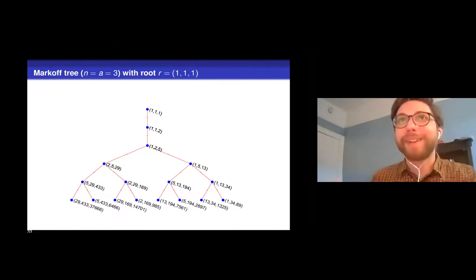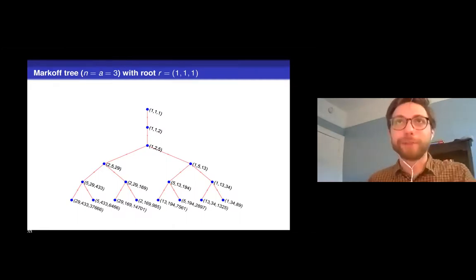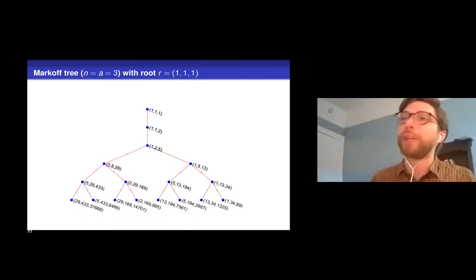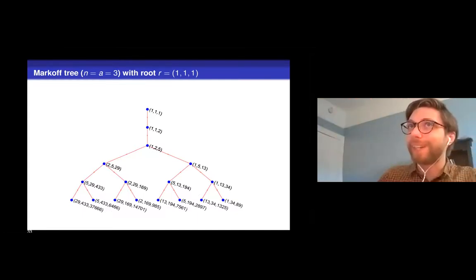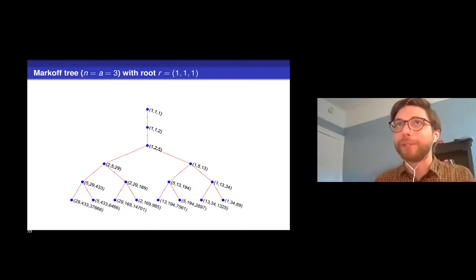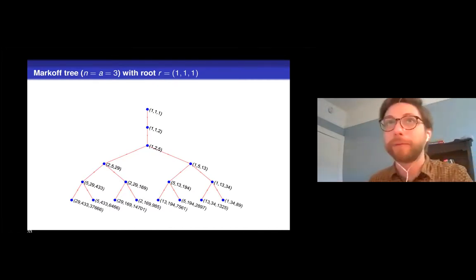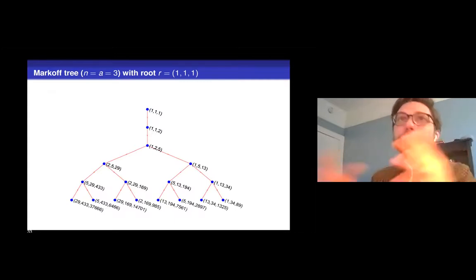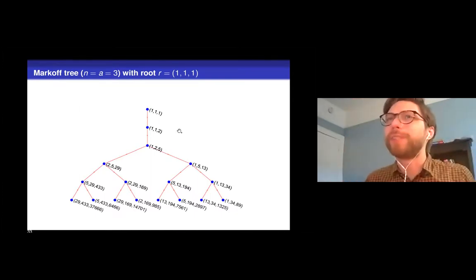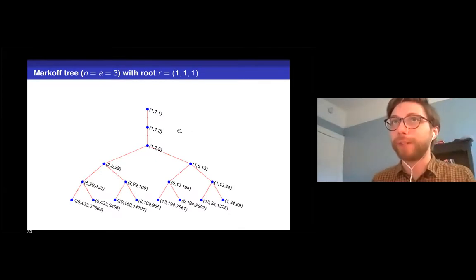And it turns out, it's not completely obvious here, but it turns out that not only are these all triples to the Markoff equation. These are actually the only solutions to the Markoff equation. Obviously, I'm truncating the tree here. But if you imagine the infinite tree, that infinite tree there gives you all of the solutions to the Markoff equation. And this is good news if you want to count solutions.